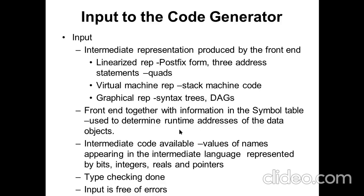The symbol table is used to determine the runtime addresses of the data objects. Three-address statements have many operands and variables. The values of the names in the intermediate language are always represented by bits, integers, reals, and pointers. The semantic analyzer performs type checking — if there are any errors in the source program, they are detected by the semantic analyzer. When giving input to the code generator, your input must be free of errors.